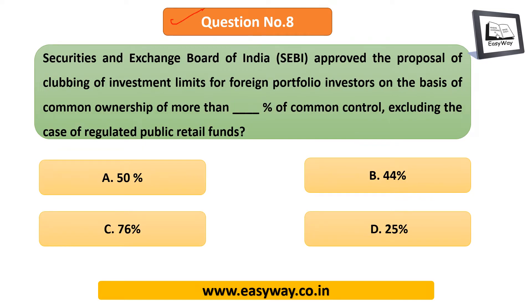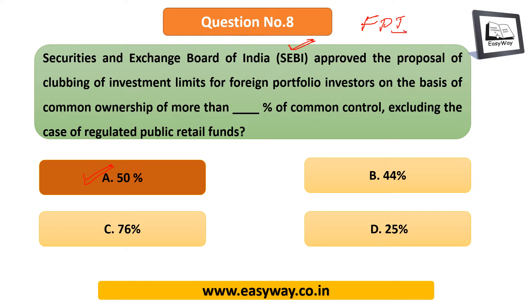Question 8: SEBI, the Securities and Exchange Board of India, approved the proposal of clubbing of investment limits for foreign portfolio investors (FPI) on the basis of common ownership of more than what percentage, excluding regulated public retail funds? The answer is 50 percent. Kindly mention the headquarters of SEBI in the comment section below. FPI stands for foreign portfolio investments.